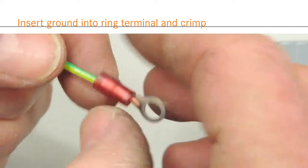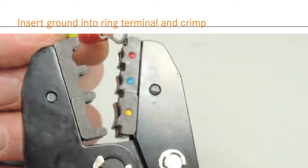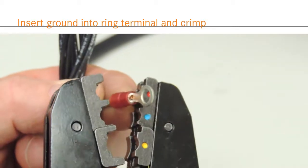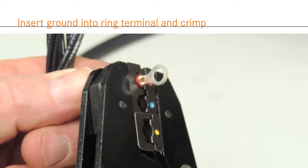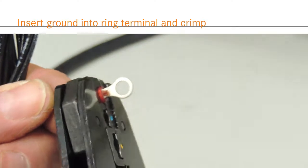If not, strip more of the insulation. Crimp the ground terminal with a crimp tool. There should be enough of the wire visible at the end of the terminal to ensure a secure crimp.